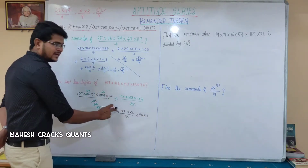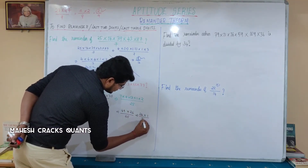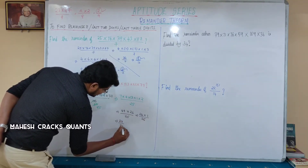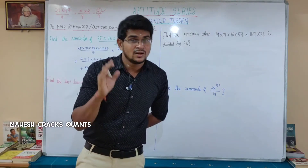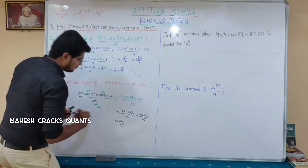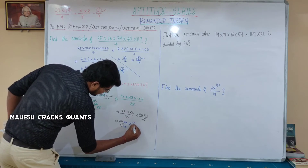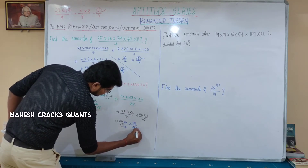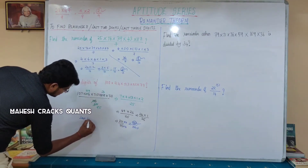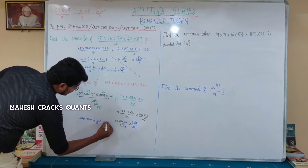So if we put this as negative remainder, we have minus 1. If we change the remainder, we have 24. The final step is 24 divided by 25. To make the last two digits, the denominator must be 100. So we multiply by 4: 24 into 4 is 96 divided by 100. So the last two digits of this expression are 96.